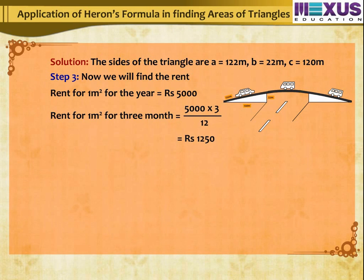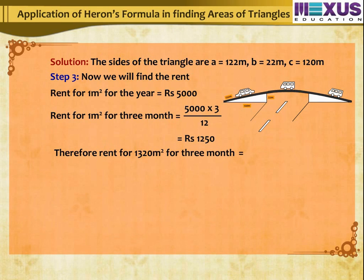Therefore, rent for 1,320 m² for 3 months is equal to Rs. 16,50,000.